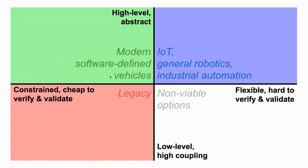I'm going to explain what UAV-CAN is with the help of this simple model. Some of you might consider it a bit oversimplified, because it is. We have two dimensions here. One dimension denotes the difficulty of verification and validation of a protocol, which is important for safety-critical applications. The other dimension represents the level of abstraction that the protocol provides for the application.